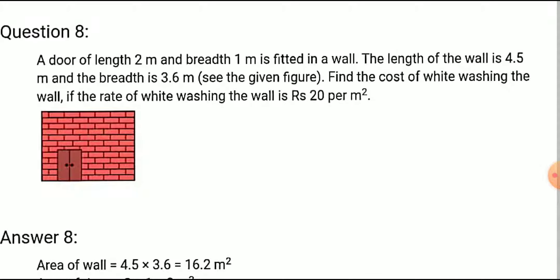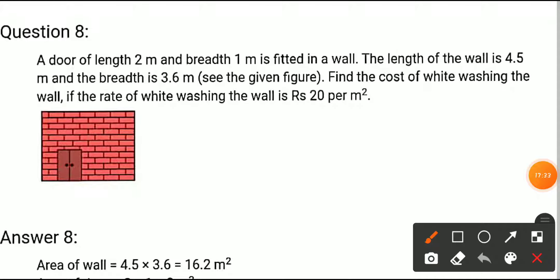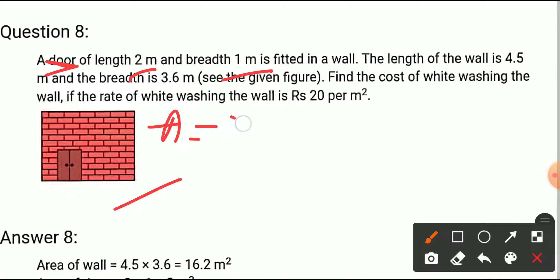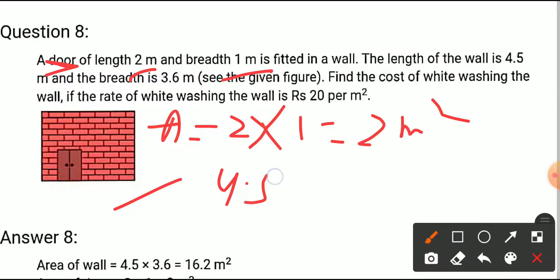A door of length 2 meters and breadth 1 meter is fitted in a wall. You can see the picture — there is a door fitted in this wall. The length of the door is 2 meters and the breadth is 1 meter, so the area of the door equals 2 into 1, which is 2 meter square. The length of the wall is 4.5 and breadth is 3.6, so multiply to get 16.2 meter square.